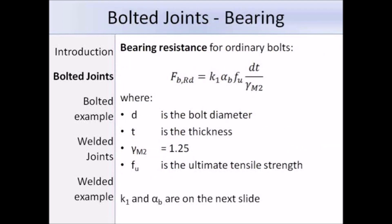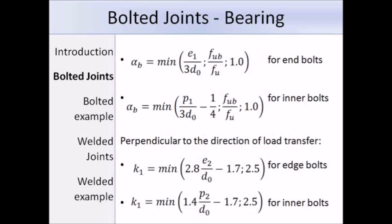The next check is for bearing resistance of ordinary bolts. The equation from Table 3.4 is K1 times alphaB times Fu times D times T over gamma M2. D is the bolt diameter, T is the thickness of the connected parts — if parts of different thicknesses are connected, take the smallest value. Gamma M2 is 1.25 and Fu is the ultimate tensile strength. The values of K1 and alphaB depend on bolt spacing and edge and end distances; you take the minimum value from those different terms. For example, for end bolts, alphaB is the smallest value of either E1 over 3D0, Fub over Fu, or 1.0.